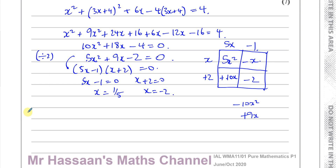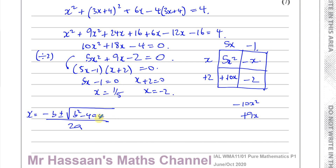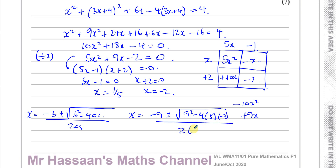You could also use the quadratic formula — though it's not necessary here since this factorizes easily. The key is you must show the working. Simply quoting the formula and then writing the answers won't earn the method mark. You need to write out x equals minus 9 plus or minus the square root of (9 squared minus 4 times 5 times minus 2) all over 2 times 5, and then show the solutions x equals 1/5 and x equals minus 2. Completing the square is also acceptable, as long as you show a valid method.